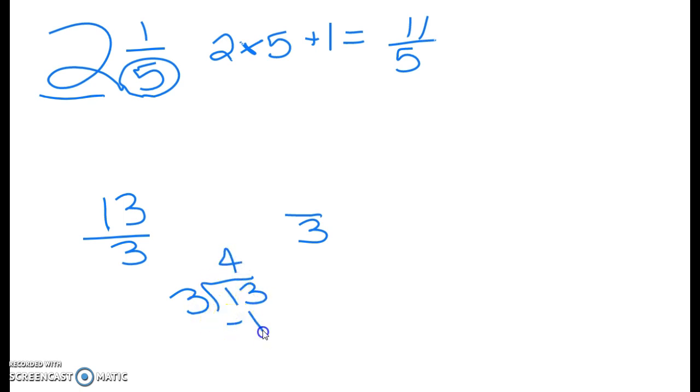4 times 3 is 12, and that gives us a remainder of 1. 4 becomes your new whole number, and 1 is your new numerator. So 4 and 1/3 is the mixed number version of the improper fraction 13 over 3.